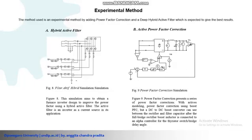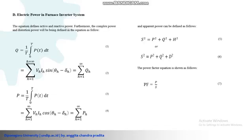The method used is an experimental method by adding power factor correction and a hybrid active filter, which are expected to give the best result. After the installation of power factor correction, it is expected that the quality of electric power will be increased. In a system containing harmonics, the power factor component will also be generated at any time. As a result of harmonic current, the power value can be represented as follows.